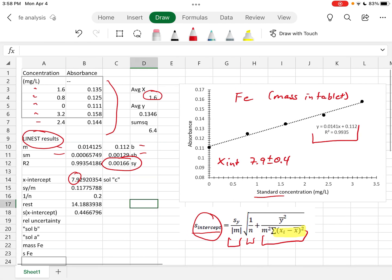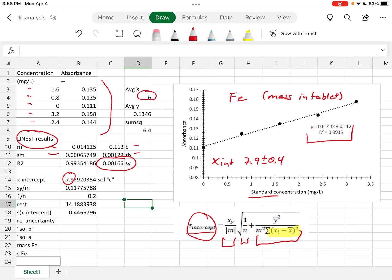The error in the intercept is right there. And we can get a final x-intercept value with its uncertainty of 7.9 plus or minus 0.4 in this particular case.